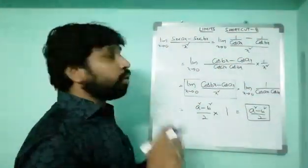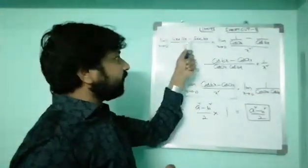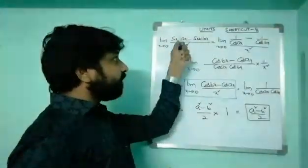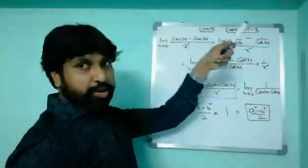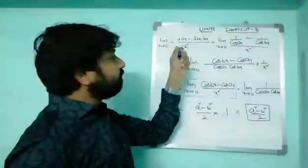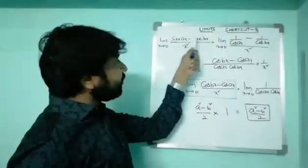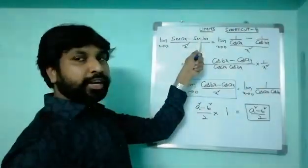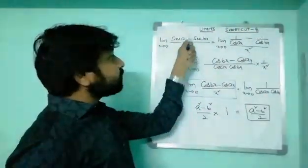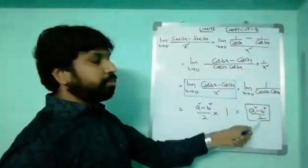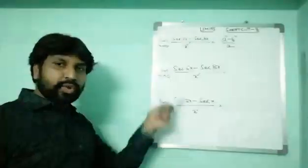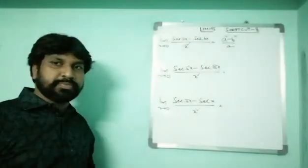So to summarize: whenever you have a cosine combination, the answer is (b² minus a²)/2. Whenever you have a secant combination, the answer is (a² minus b²)/2.